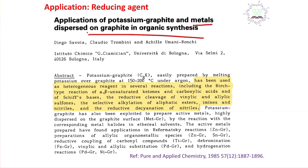Let us discuss a bit about its application: metals dispersed on graphite in organic synthesis. This potassium graphite is a reducing agent. If you react this, for example, M plus Cl minus with KC8, it will reduce M plus into M.